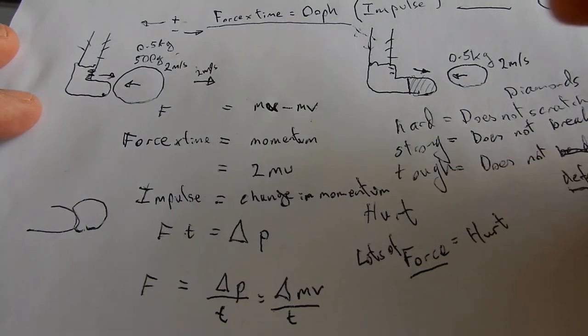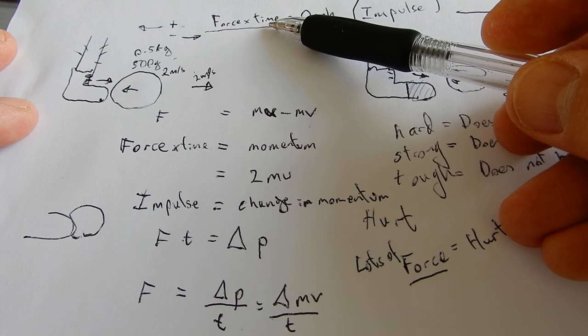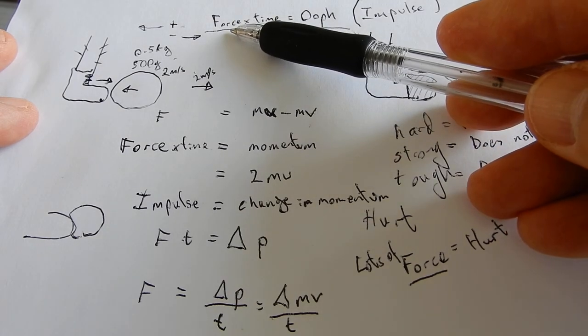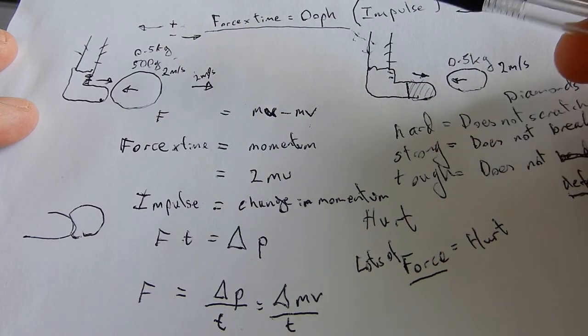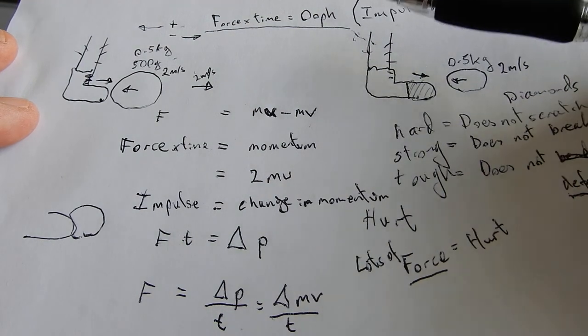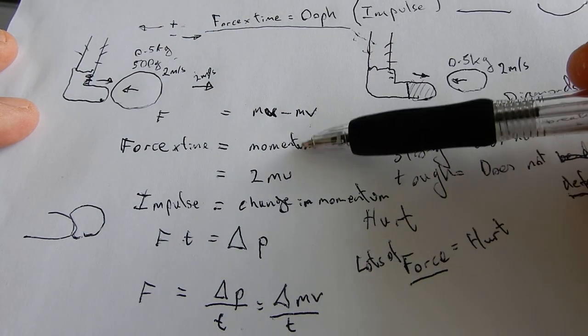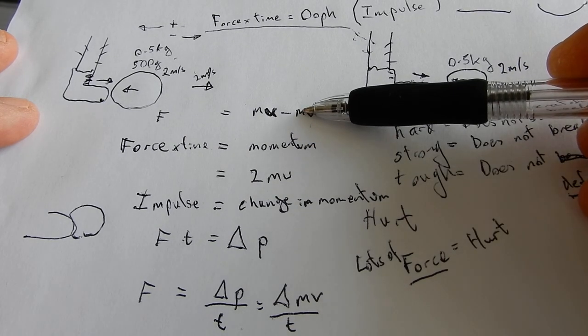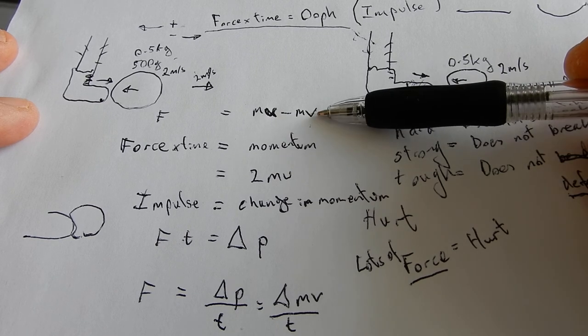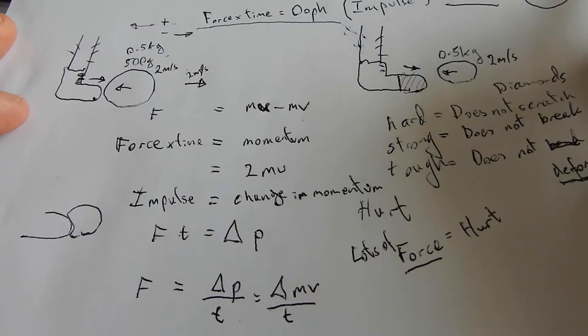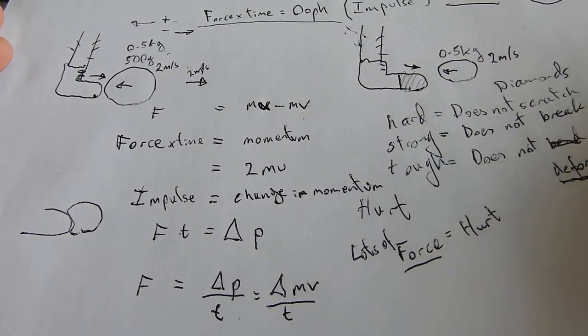Into wall. Stuff like that. Crumple zones mean that there's lots of time when a car crashes. And therefore giving less force on the person. So therefore you know less dead. So it's important. And okay momentum with car crashes. Try to have a light car. And don't go too fast. You know obviously you'll survive more if you're not going too fast.